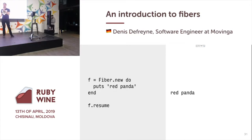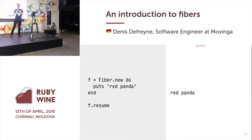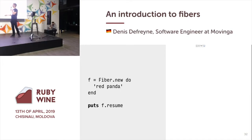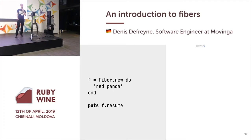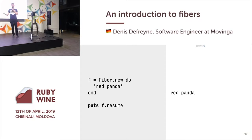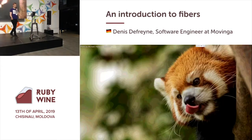Here is a Fiber that prints 'red panda'. So if I resume it, it just prints 'red panda'. What I can do is change this so that the Fiber implicitly returns 'red panda' as a string, and then I can print whatever the resume call returns. So this will print 'red panda'. This is one way of getting data out of a Fiber.